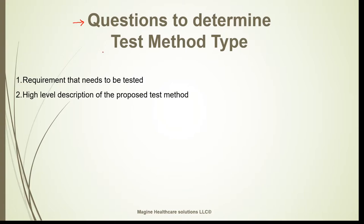The second question is a high-level description of the proposed test method. For example: length of a plastic tube using a calibrated ruler, resistance measurement of an electric wire using a multimeter, go/no-go measurements using a pin, and presence of foreign material on a sterile package. These are high-level descriptions of the proposed test method.